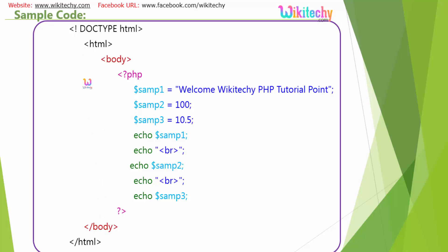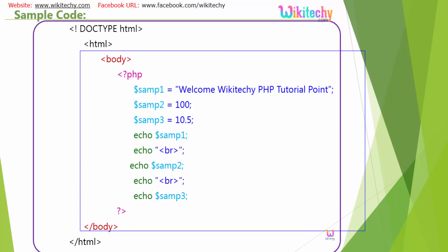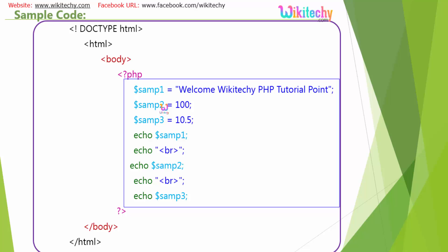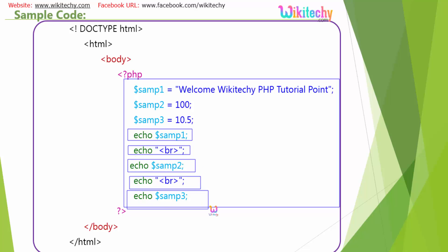Here is a simple code example. You will have the opening and closing HTML tags with the body. Under that, you specify the PHP file using the opening tag with a question mark and PHP, ending with a closing question mark. The variables SAMP1, SAMP2, and SAMP3 are printed using echo, with line breaks between the string, integer, and float values.